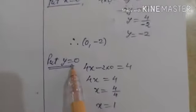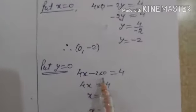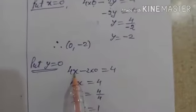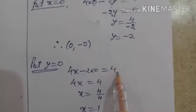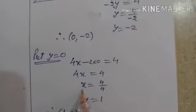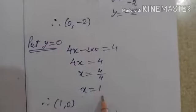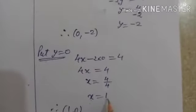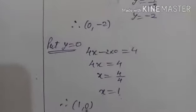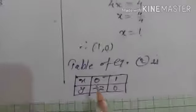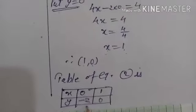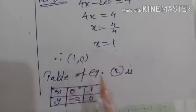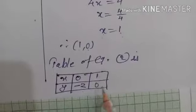Now put y equal to 0: 4x minus 2 into 0 equals 4, so 4x equals 4, giving x equals 1. The second point is x equal to 1, y equal to 0, i.e., (1, 0). Table for equation 2: first point (0, minus 2) and second point (1, 0).